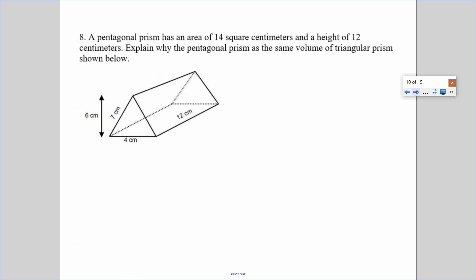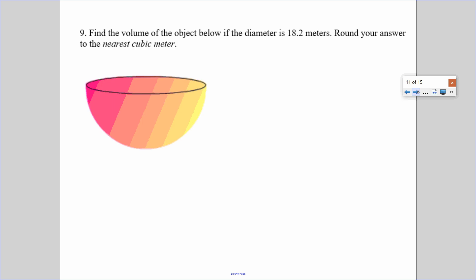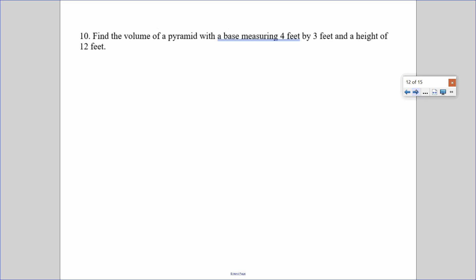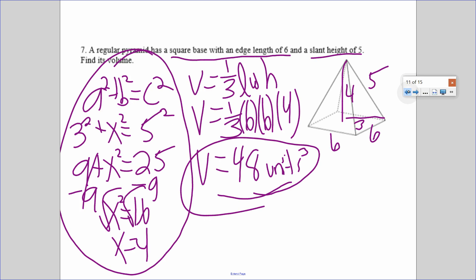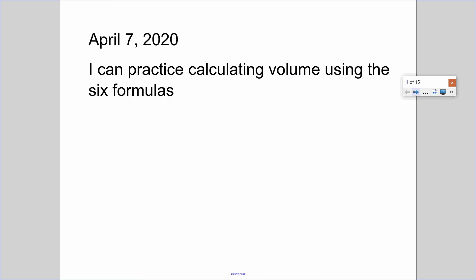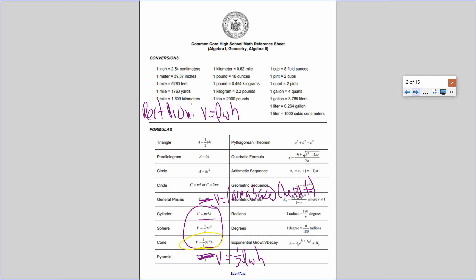One more example I want to go over with you, number nine. What shape is this? Well it's half of a sphere. There's actually a name for half of a sphere, it's called a hemisphere. And I don't see hemisphere in my reference sheet but I do see sphere, and I know that sphere is V equals four-thirds pi r cubed.